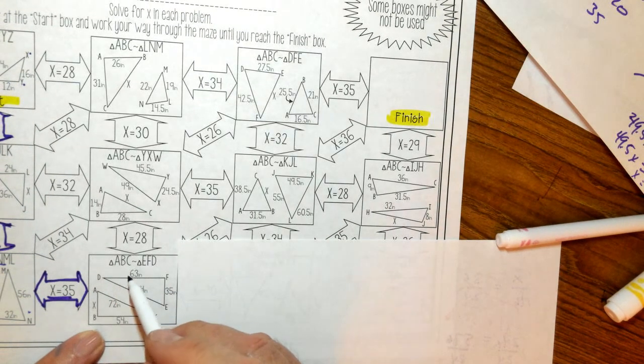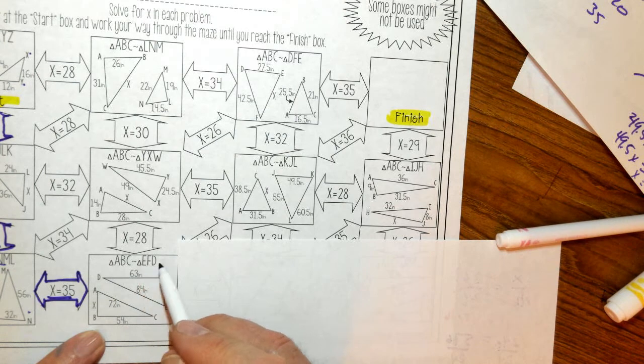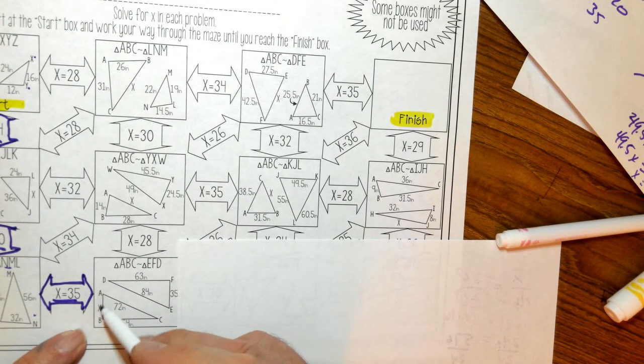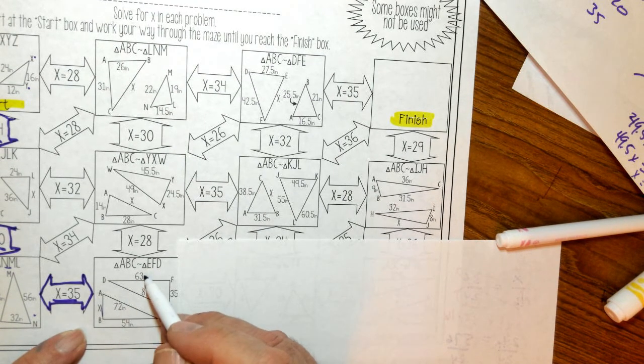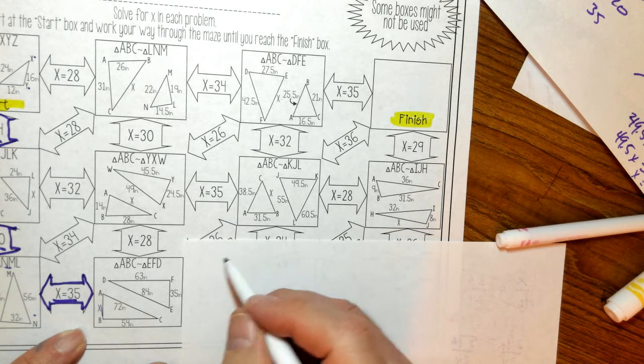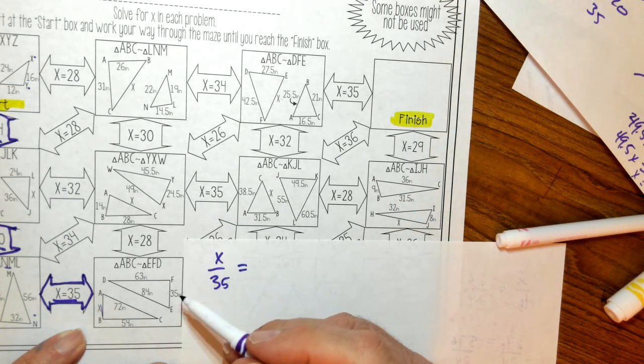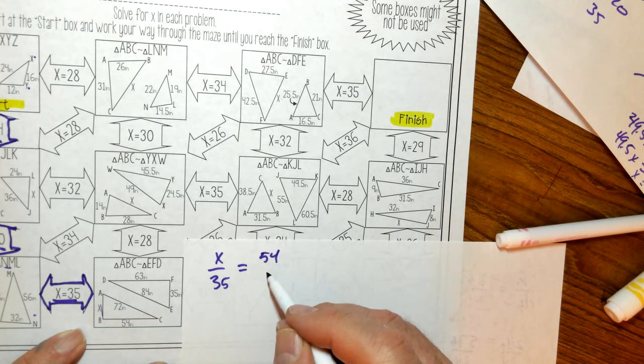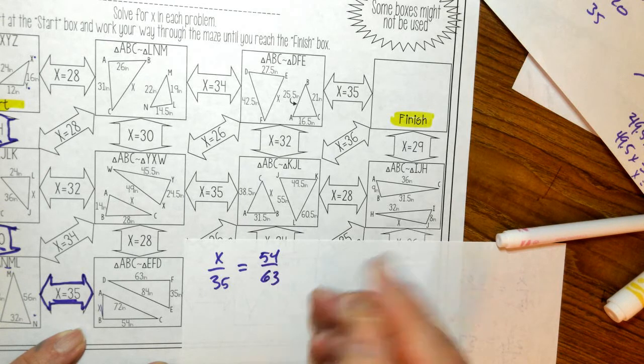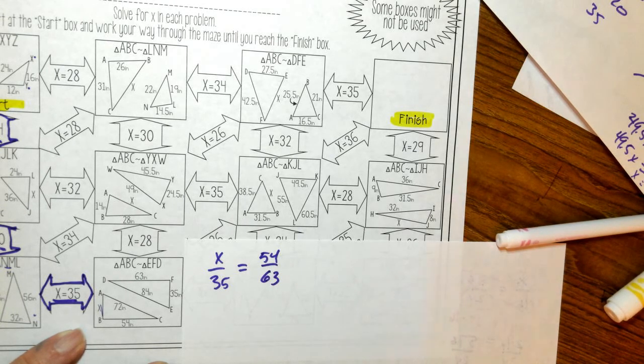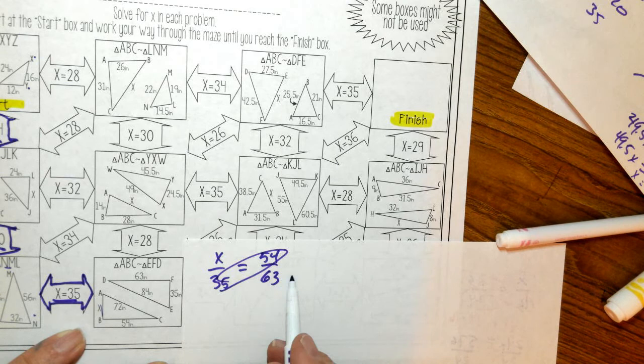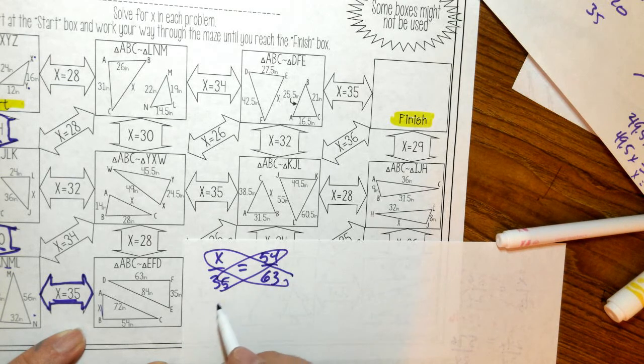And I have triangle ABC is similar to triangle EFD. So my unknown is AB. So I want to hook it up with EF. So I'm going to say X is to 35 as 54 is to 63. So now my cross product is going to be 54 times 35 and X times 63.